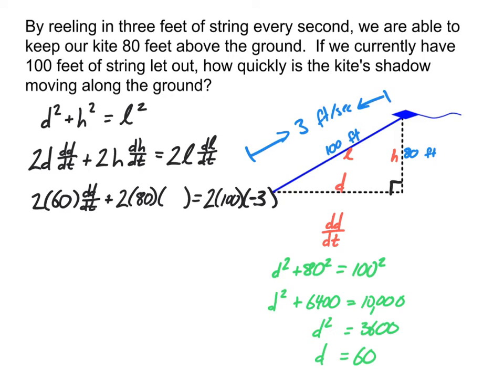Then the last thing we need to plug in here is the value of dh/dt. How quickly is the height of this kite changing? And this is the sort of thing that can throw us off if we aren't real careful about understanding the situation. Remember, in this situation, we're trying to keep our kite 80 feet above the ground. That means that our height is not changing at all. Therefore, dh/dt is zero.